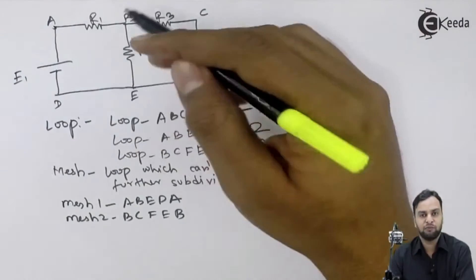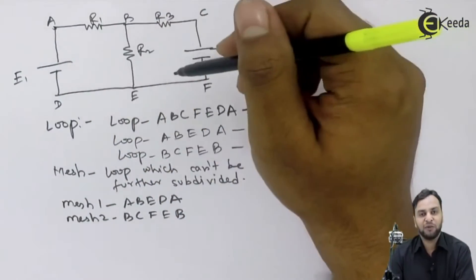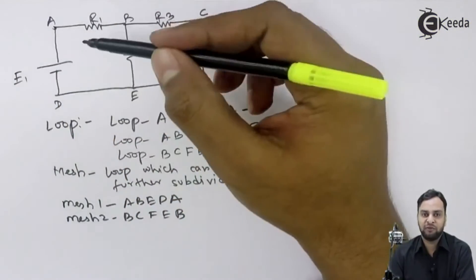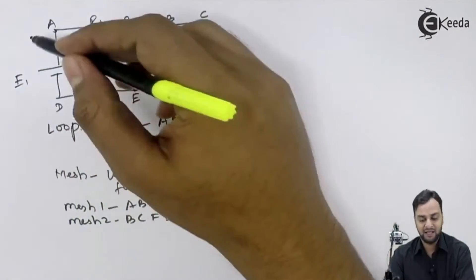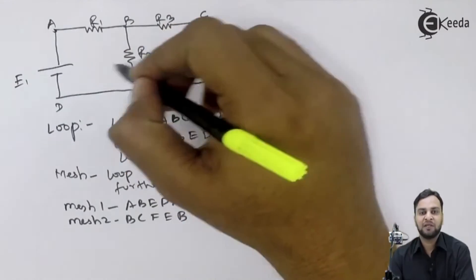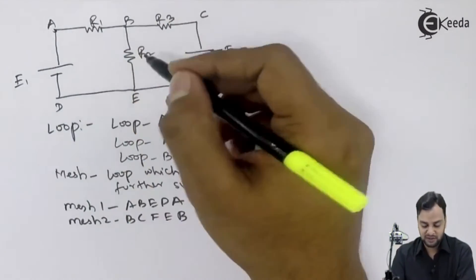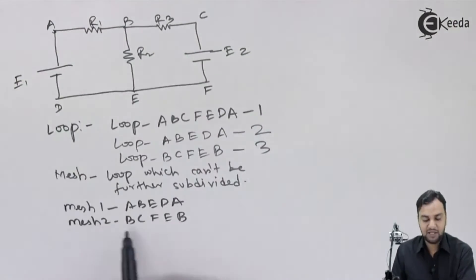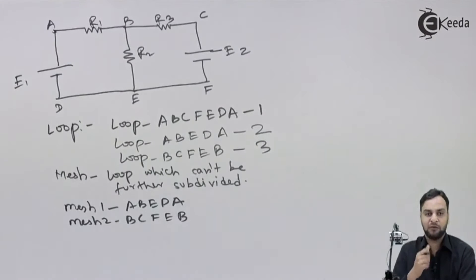The outer one is a loop, but that loop is divided into 2 loops, so that loop cannot be a mesh. A mesh is a loop which cannot be further subdivided. So we have 2 loops available: A-B-E-D-A and B-C-F-E-B. These 2 loops can be considered as meshes. So in all we have 2 meshes: Mesh 1 is A-B-E-D-A, and Mesh 2 is B-C-F-E-B.